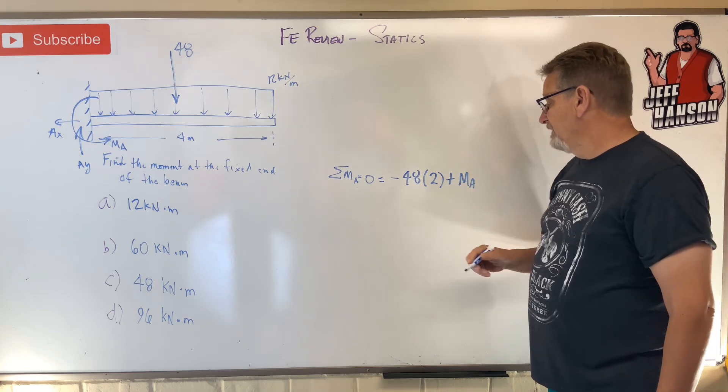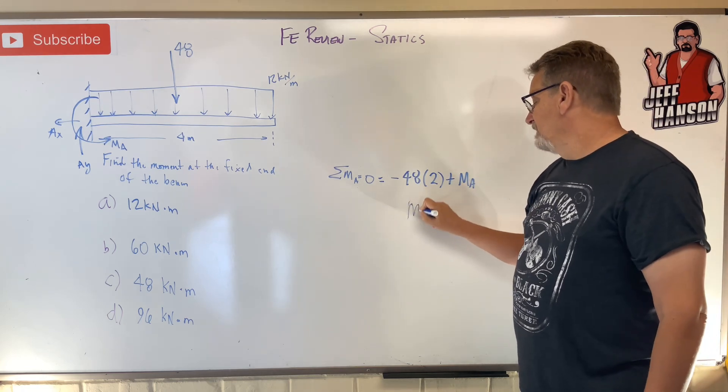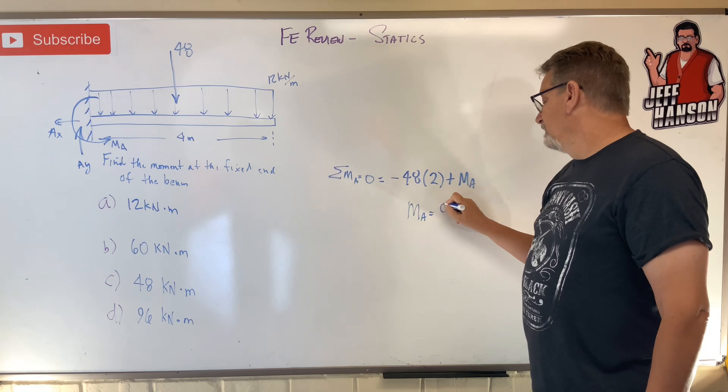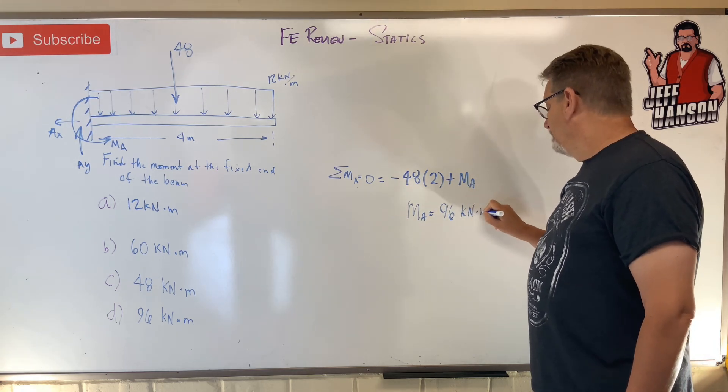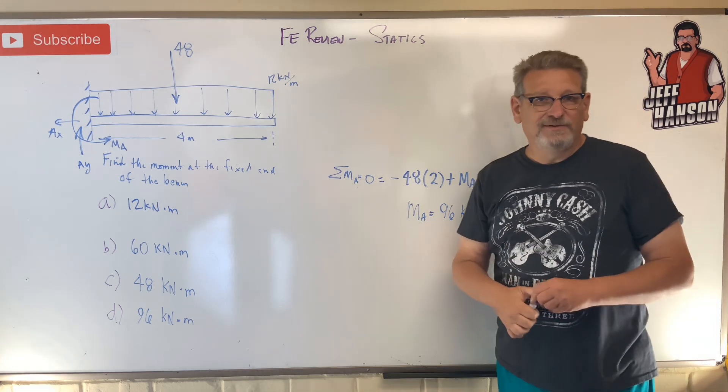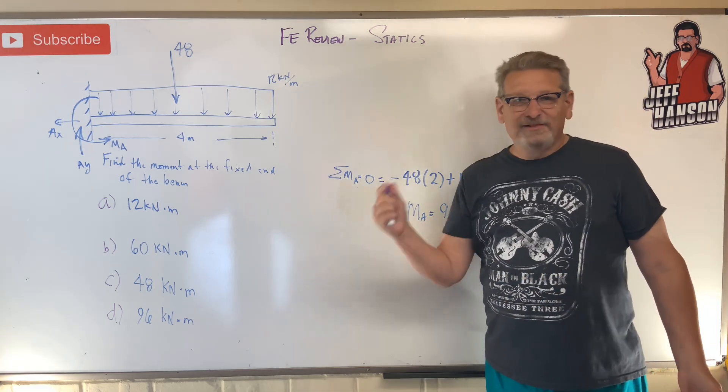And so this is pretty easy. Ma equals 96 kilonewton meters. I hope you did that one in your head. We kind of have a harder one than that. Let's do another one.